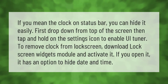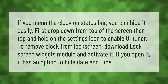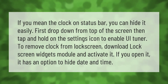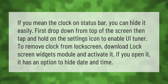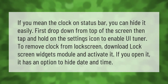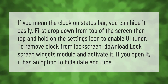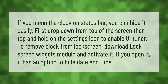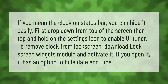If you mean the clock on the status bar, you can hide it easily. First, drop down from the top of the screen, then tap and hold on the Settings icon to enable UI Tuner. To remove the clock from the lock screen, download the Lock Screen Widgets module and activate it. If you open it, it has an option to hide date and time.